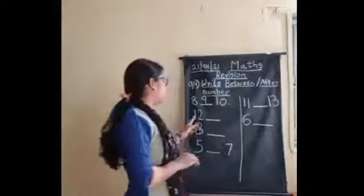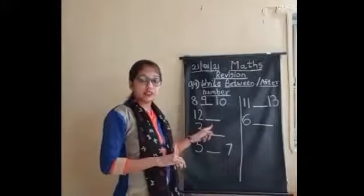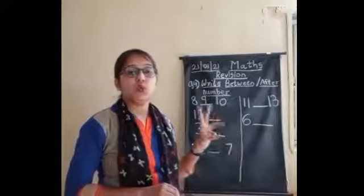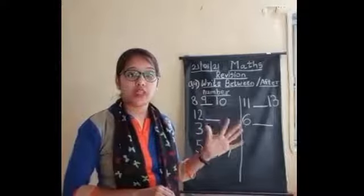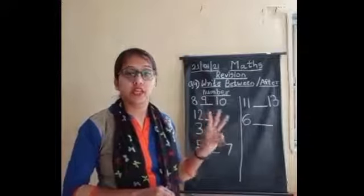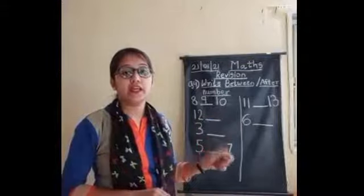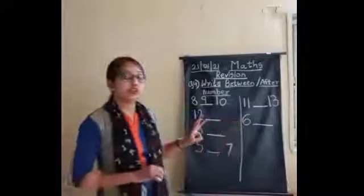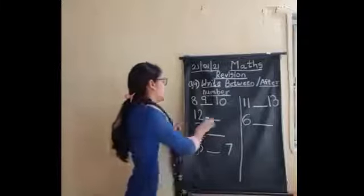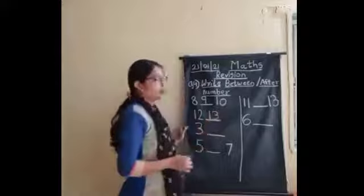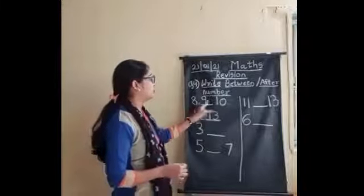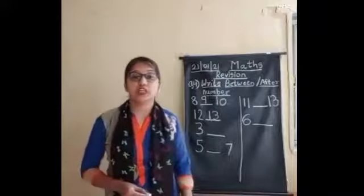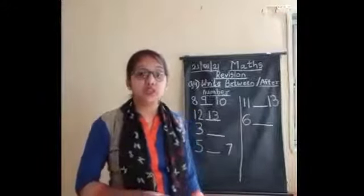Then, the number is 12 blank. After number 12, which number comes? After number 12: 13. You all understand? This is the between number and this is the after number. Then the next question is 3 blank 10 — we have to see which number comes after number 3.